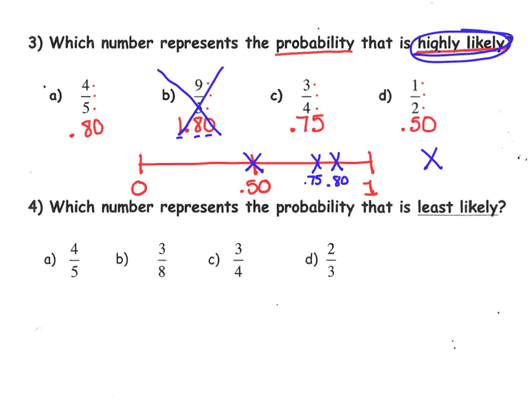Of those three, one of them has a stronger chance of occurring than the others. The closer we are to 1, the more likely the chance. So it's choice A.